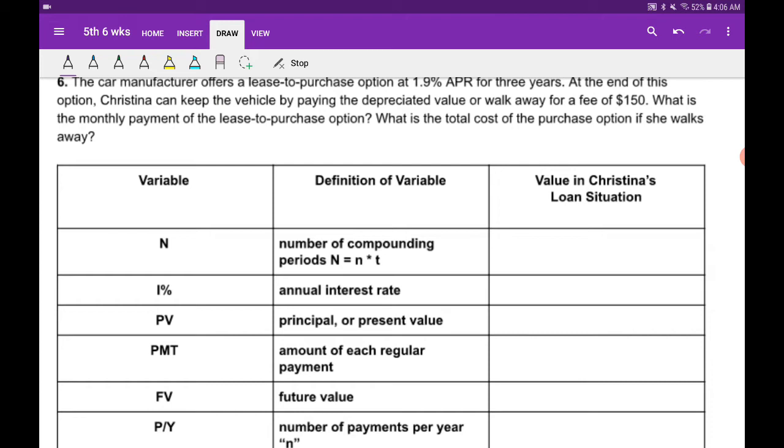So let's see what they're asking for here. Again, compounding periods, we're going to do for three years, so that's going to be 36. Our interest rate, we know is 1.9%. Our principal investment, well is the value of the car, it's $23,579.